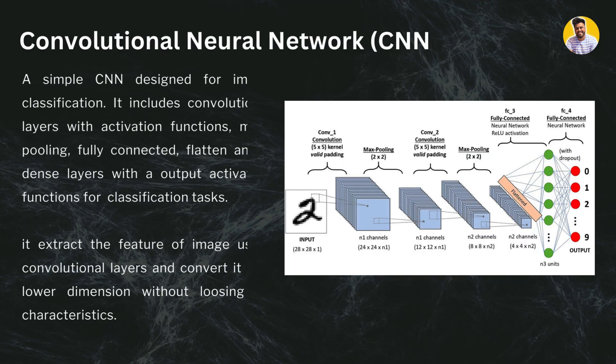The next type of neural network is the convolutional neural network. Convolutional neural networks are designed for image classification tasks because they include convolutional layers with activation functions, max pooling layers, fully connected layers, a flatten layer, and a dense layer with an output activation function.